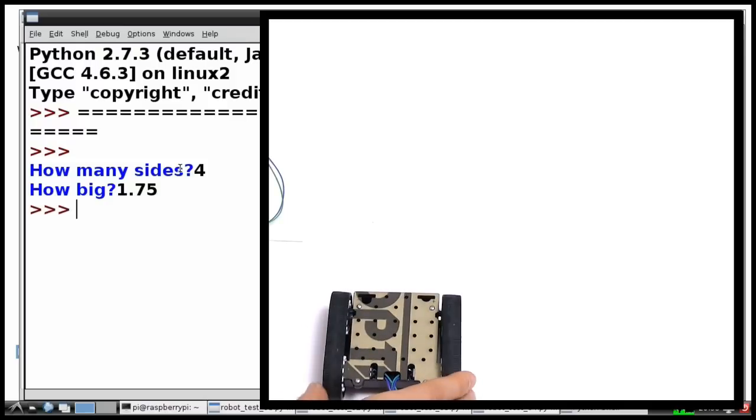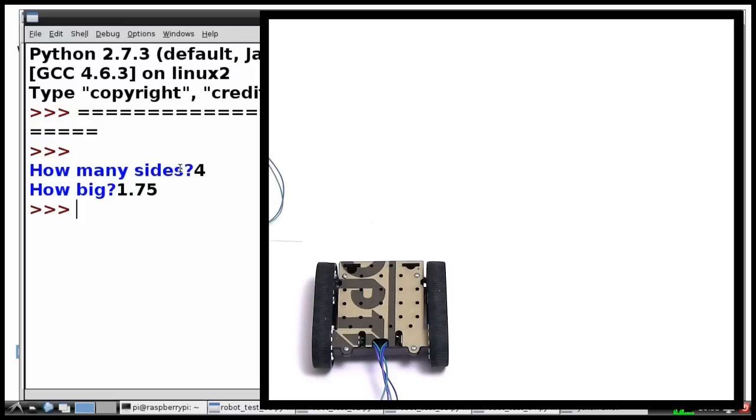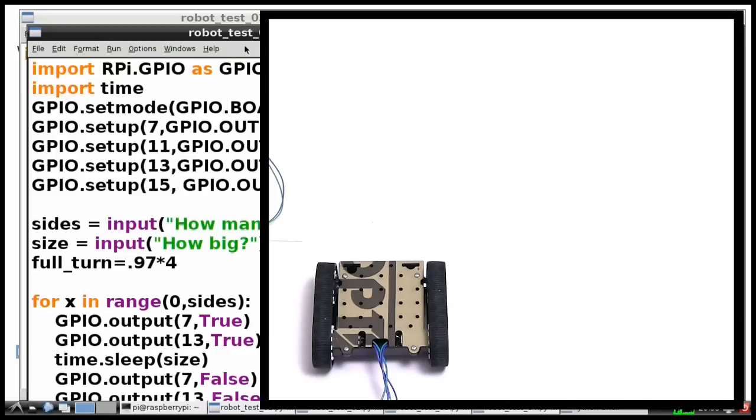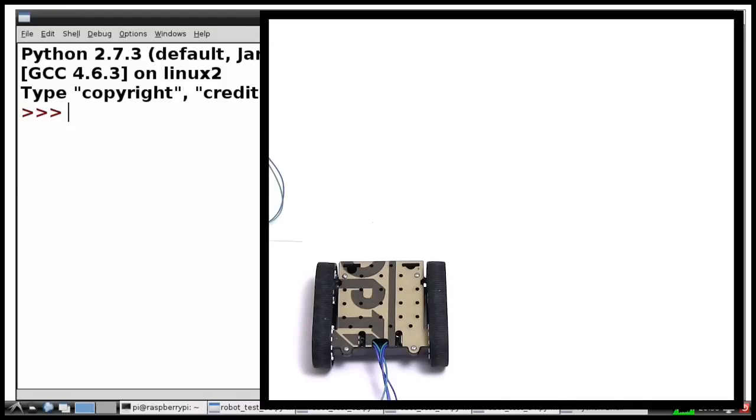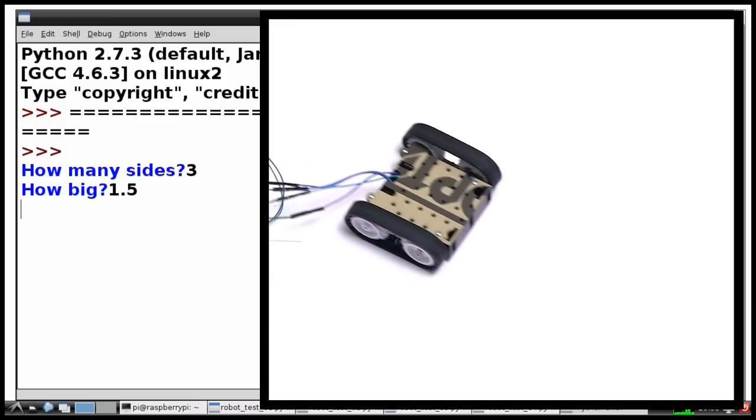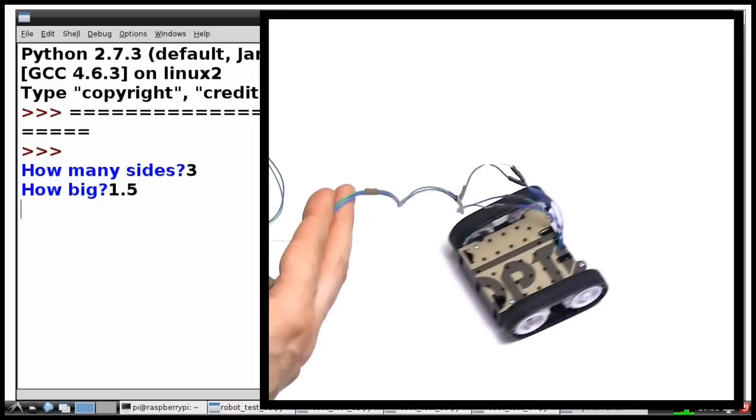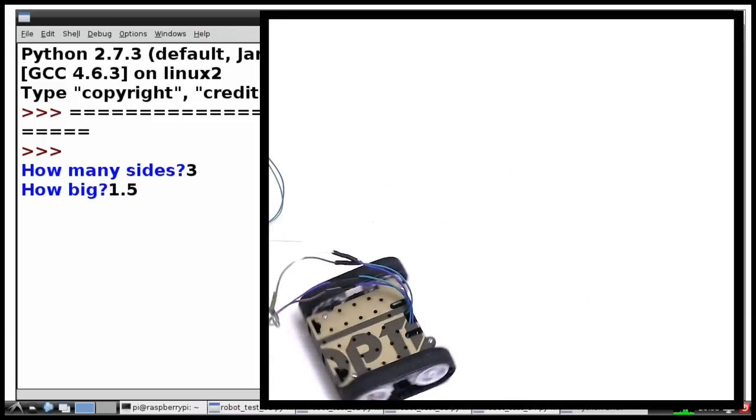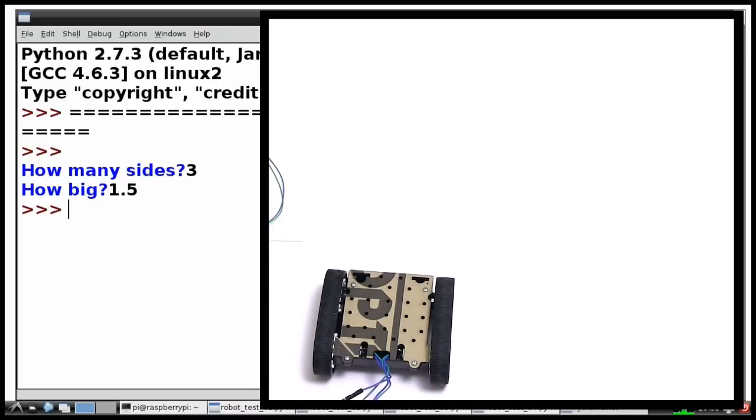And just to prove this code will do other shapes, we'll run it, run module and we'll put some different variables in. What if we did say a triangle? So if we give it three sides and we ask it to do a 1.5 size. One side. Spins for more. Two sides. Spins for more. Three sides. And comes back roughly where it started.